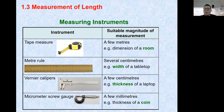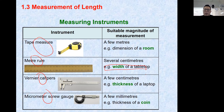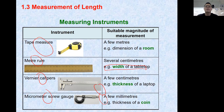For measuring length in labs we have a lot of equipment, but in secondary school the common ones are these four: measuring tape, meter rule, vernier caliper, and micrometer screw gauge. They are used to measure length with different accuracies. For example, to measure the width of a laptop I'd prefer a tape measure or meter rule, but for something smaller like the thickness of a coin or test tube, I'd use a micrometer screw gauge or vernier caliper.